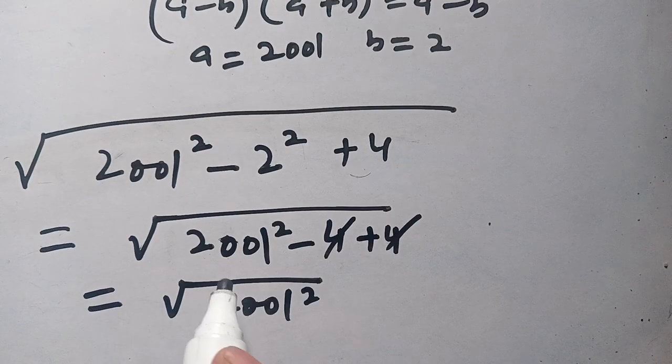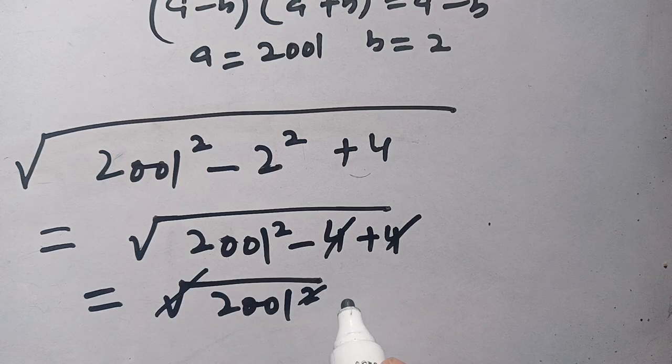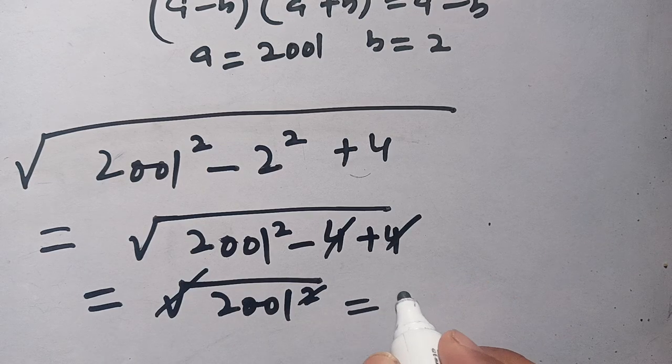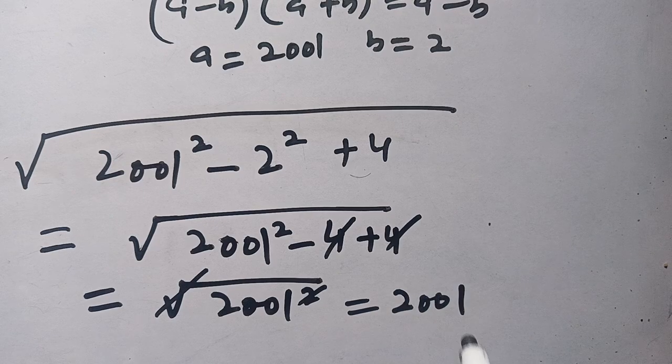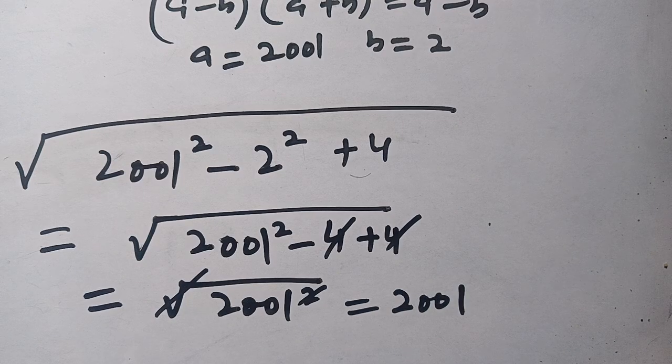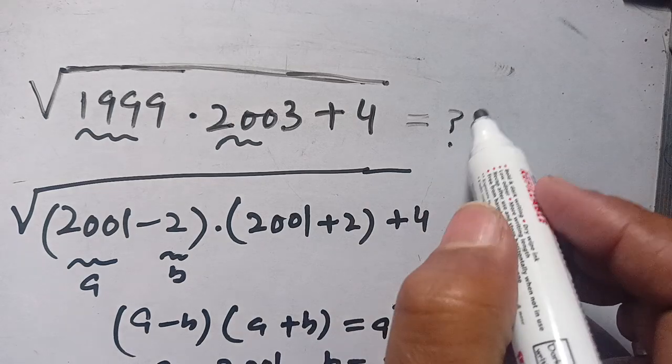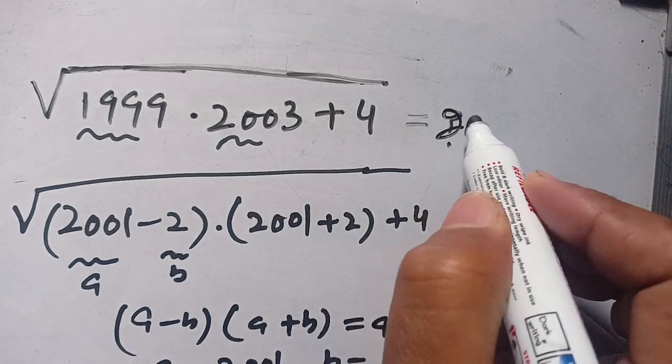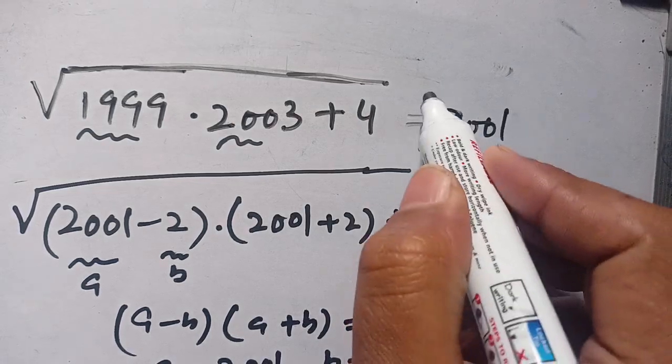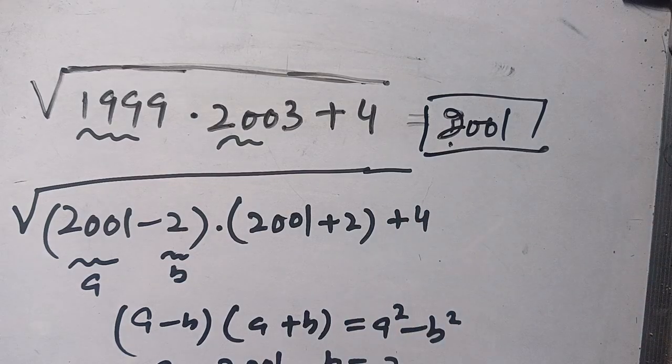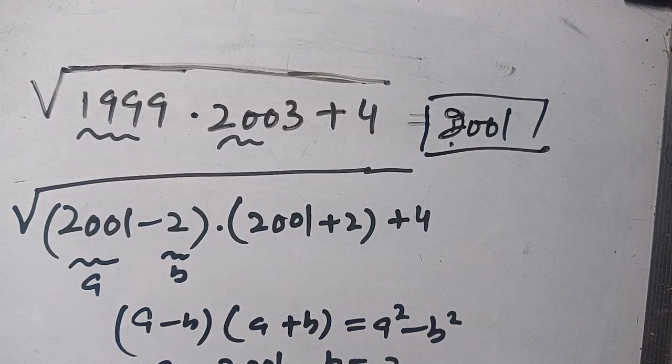Now we can cancel out this square by square root, and our remaining term is only 2001. Thus the final answer is equal to 2001. If you enjoyed this, make sure to subscribe to our channel for more informative videos. See you in the next video, till then bye.